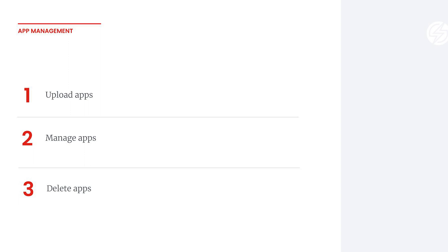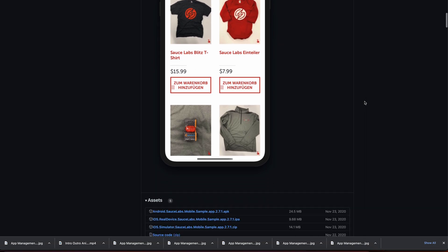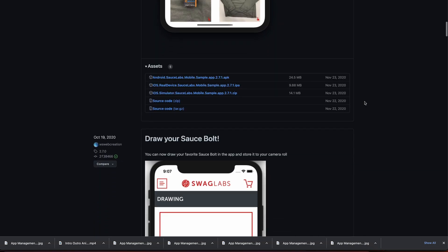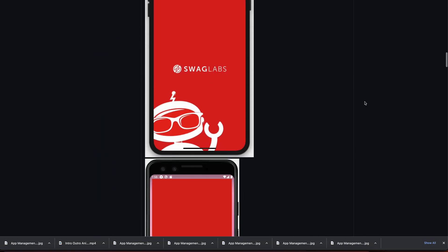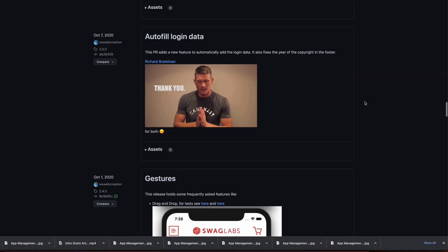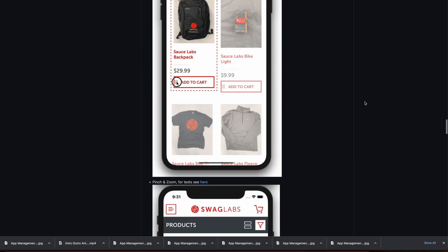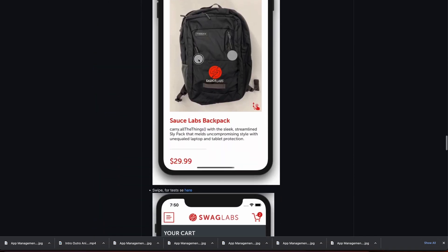For this video, we'll show you how to do it through the UI, but keep in mind that you can also upload your app via the REST API. For information about uploading via the API, see the documentation in the link below. If you'd like to follow along but don't have an app file to upload and test on, you can access our sample apps by visiting our GitHub repository, which we'll link in the description below. Let's dive in to see how it works.